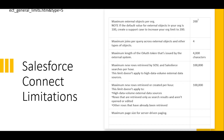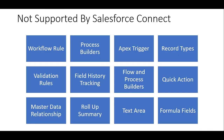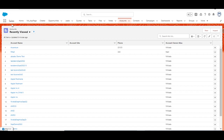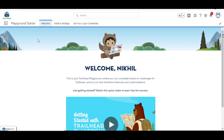We will talk about Salesforce Connect limitations after the demo. In this demo we will do three things: first, I will show account data from Salesforce Org A being displayed in Org B without saving any account data in Org B. Second, I'll bring the contact object from Org A and show it in Org B. Third, I will establish a relationship between contact and account so that the account's related list shows contact data. On screen, the red-themed org is Org A and the blue-themed org is Org B.